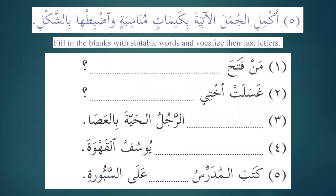The next one is Akmil — this is a very special fil al-amr. It is the only fil al-amr in Arabic that starts with fathah; normally fil al-amr starts with dhammah or kasrah — this is the only exception. Akmil al-jumal al-atiyata bi-kalimatin munasibatin — complete the following sentences with proper words — and put the proper case endings and proper form of the verb or noun.